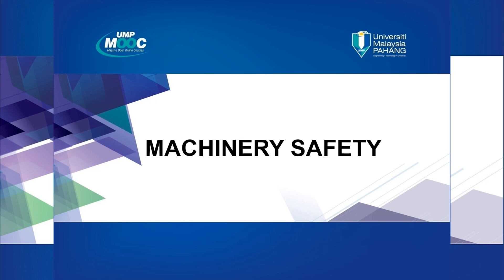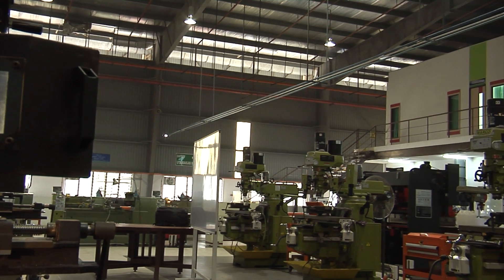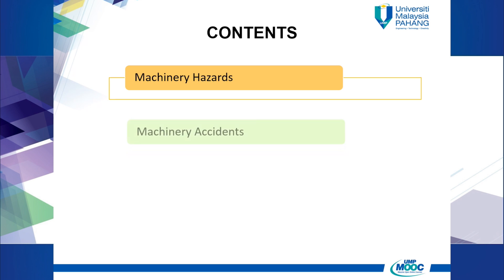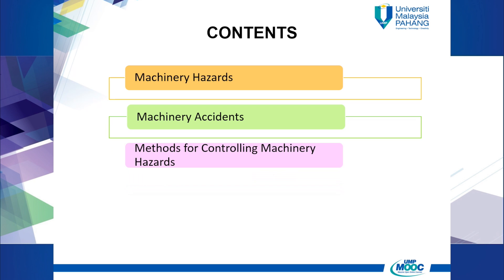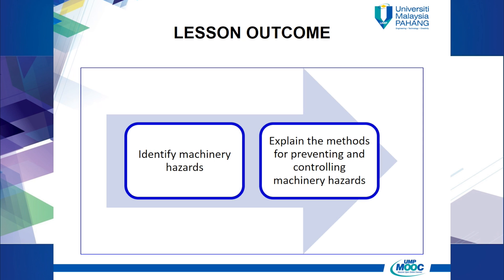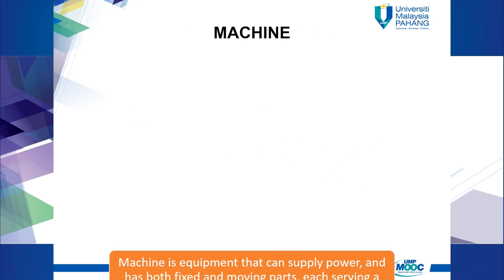Let us talk about machinery safety. Our lesson today will focus on machinery hazards, machinery accidents, methods for controlling machinery hazards, machinery protection, and measures for prevention and control. At the end of this lesson, we hope you achieve two objectives: objective number one, identify different types of machinery hazards; and objective number two, explain the methods for preventing and controlling machinery hazards.